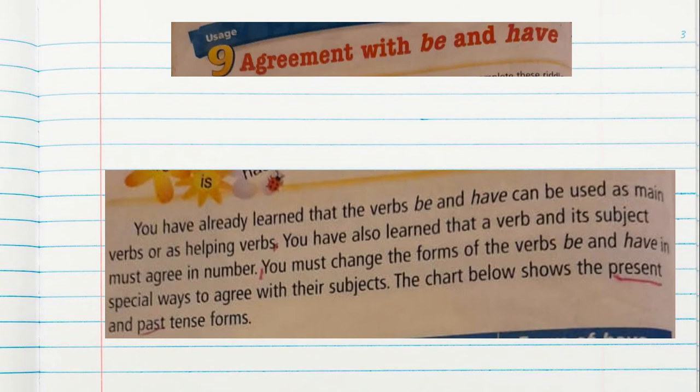The class today is agreement with be and have. You have already learned that the verb be and have can be used as a main verb or helping verb. You have also learned that a verb and its subject must agree in number. You must change the form of the verb be and have in special ways to agree with their subject. Remember, we will work with two verbs: be and have.